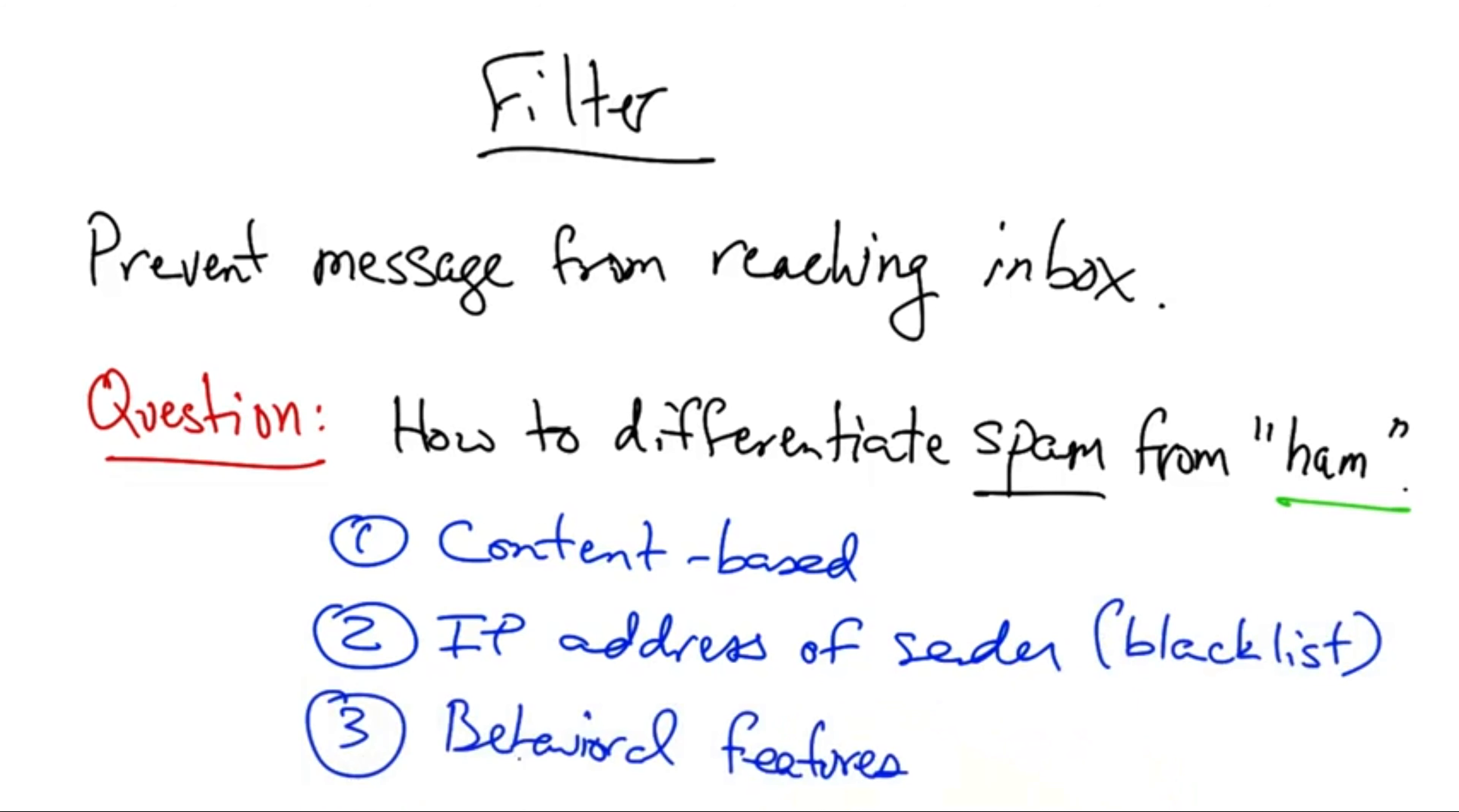Third, we can construct filters based on behavioral features or how the mail is sent. So, for example, if the mail is sent at a particular time of day or if it's sent in a batch of emails that are all roughly the same size, then we may be able to figure out that a message is likely spam simply based on the sender's sending behavior.